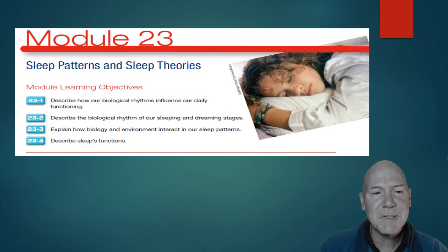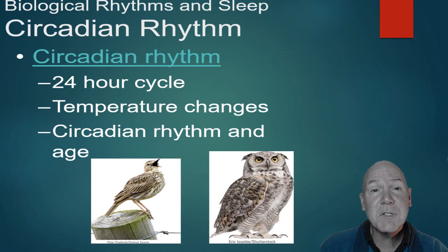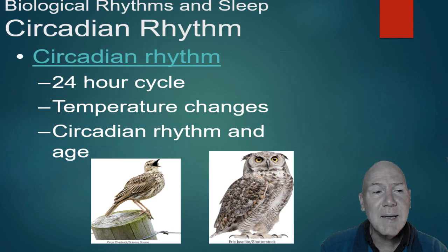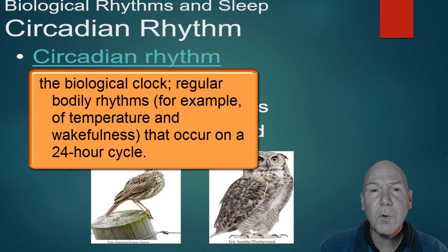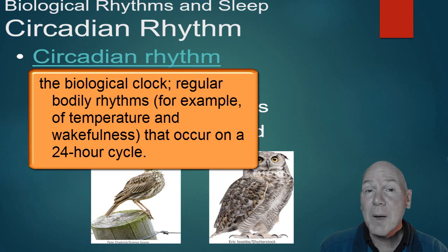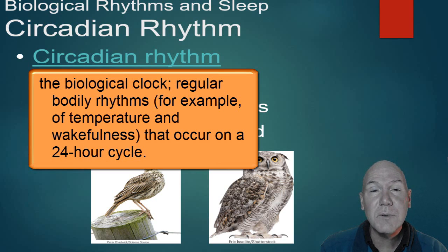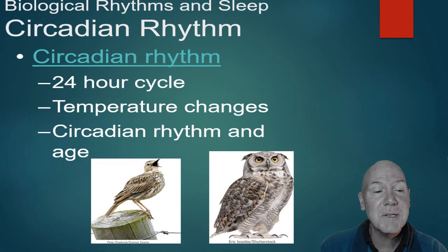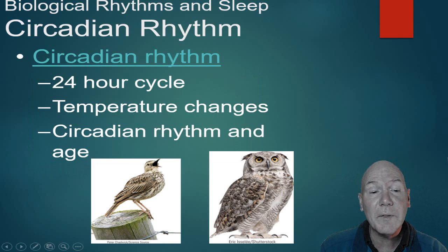Now, sleep patterns and sleep theories. We are biological beings with rhythms — rhythms with the moon, with night and day, menstrual cycles, and so on. A circadian rhythm is that 24-hour cycle. This is the one that can be affected by jet lag — you travel somewhere, it's four hours different, and you have trouble adjusting to sleep times. Temperature changes can also affect the circadian rhythm.